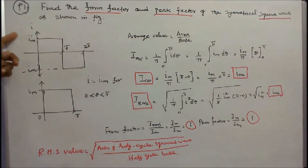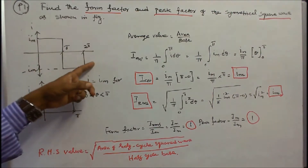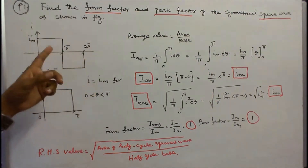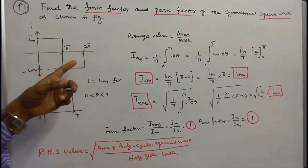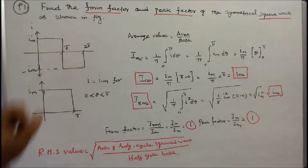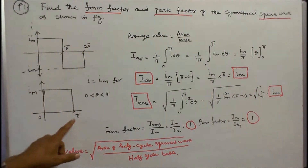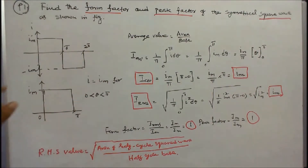The waveform shows I_m and minus I_m, with the x-axis marked at pi and 2 pi. This is a symmetrical waveform, so we consider only half of the cycle — from 0 to pi — where the value is I_m.